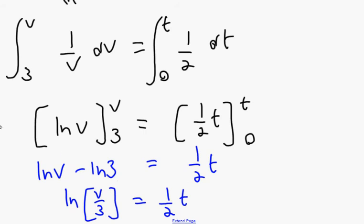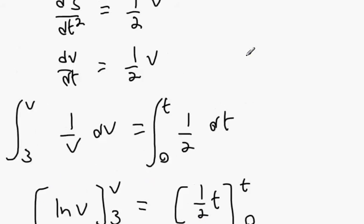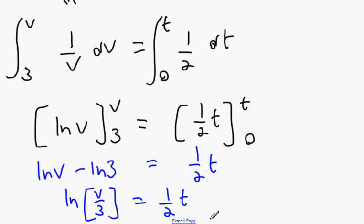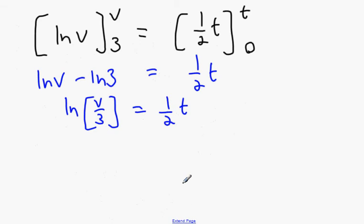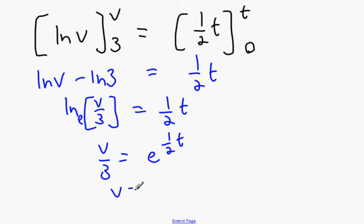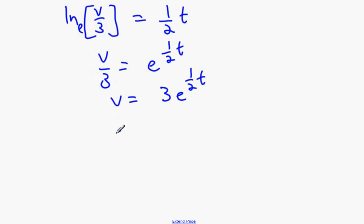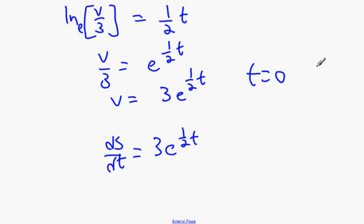We want to isolate V because we need V in terms of T, and then we'll change V into dS/dT. So V over 3 equals e to the power of a half T. Remember when T equals 0, S equals 0, and we know that V was 3.